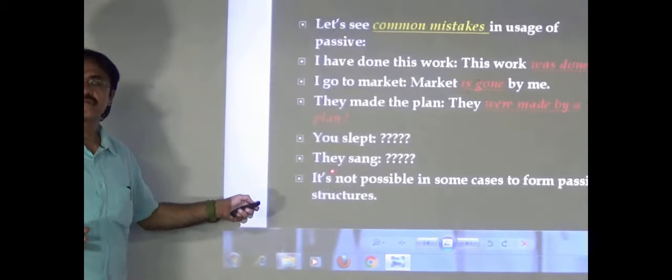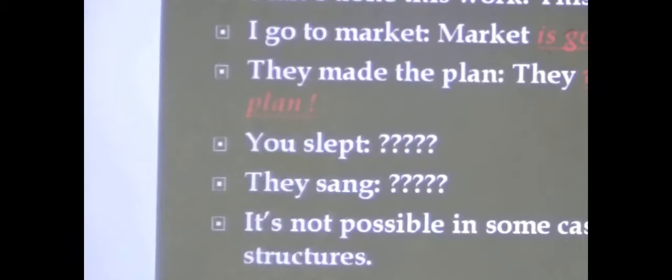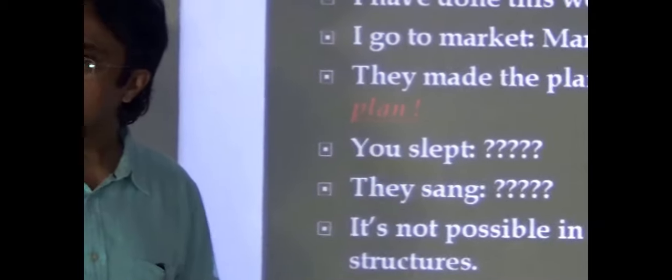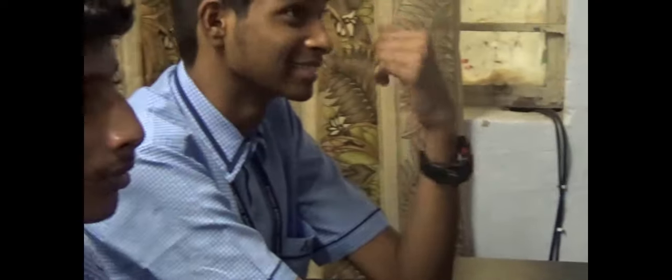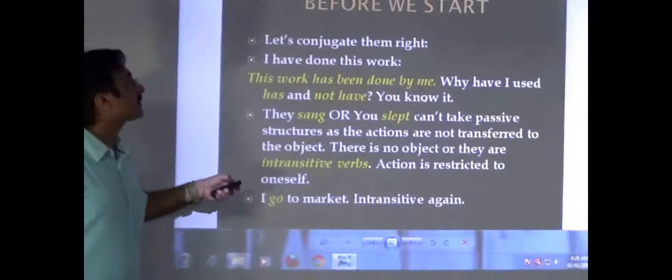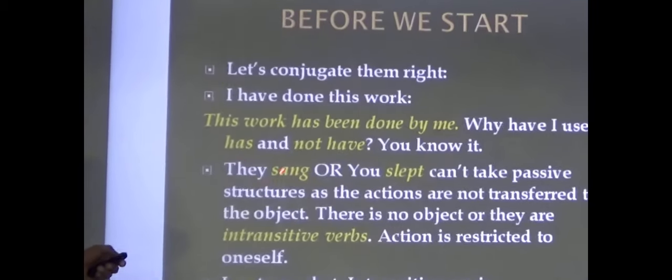You slept — but if I give you an object: 'you slept on your bed' → 'your bed was slept on.' There are certain verbs which are intransitive and action cannot be transformed. 'My uncle died yesterday' — you cannot form a passive of this; whatever you try it is incorrect. It is not possible in some cases to form passive structures.